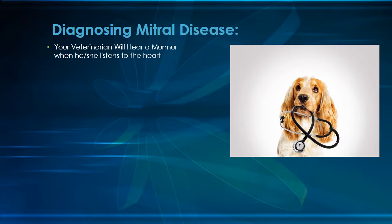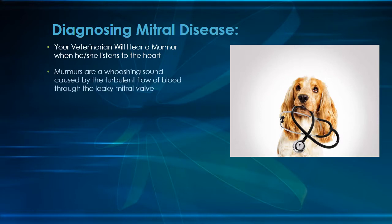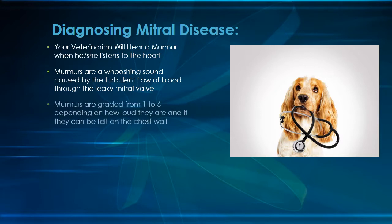A thorough physical examination should include careful auscultation, or listening to the heart. When a pet has a leaky valve, the blood flowing backwards through the leak makes a whooshing noise. This sound is what we refer to as a murmur. We grade murmurs from one to six based on their intensity, with a grade one being a minor murmur and grade six being more severe.